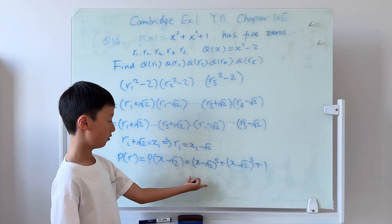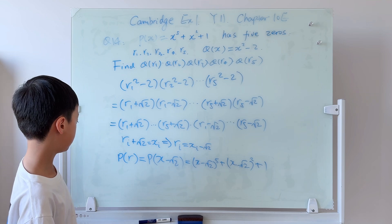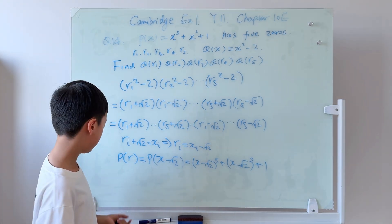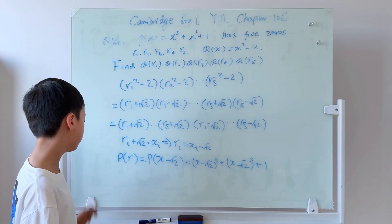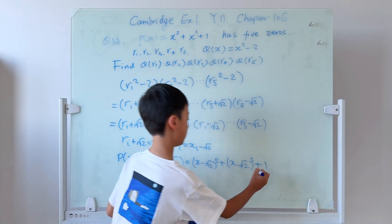Now it becomes this. One property of a root is if you substitute that root into the polynomial it comes with, then it will always equal zero. So this will equal zero.